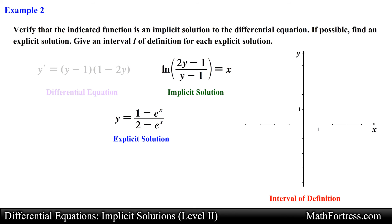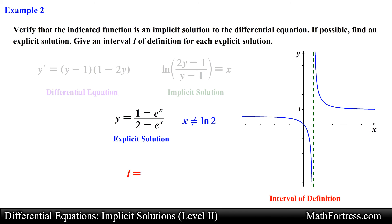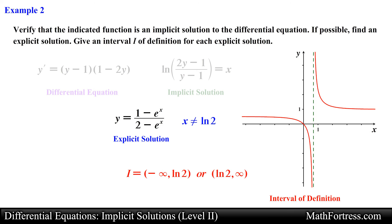So we were lucky that we actually found an explicit solution to the differential equation. Looking at the graph of this explicit solution, notice that it is not defined at x equals the natural log of 2, so we expect a vertical asymptote at that value. As a result the graph is split into two regions, giving two distinct intervals of definition: from negative infinity to the natural log of 2 exclusive, and from the natural log of 2 exclusive to positive infinity. Either of these two intervals is an appropriate interval of definition.